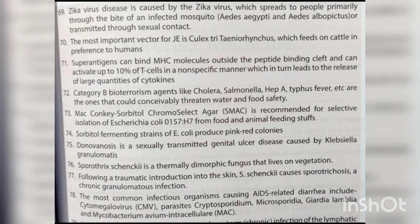Category B bioterrorism agents — such as cholera, Salmonella, hepatitis A, and typhus fever — are those that could conceivably threaten water and food safety. MacConkey sorbitol chromogenic agar is recommended for selective isolation of E. coli O157:H7 from food and animal feeding samples.